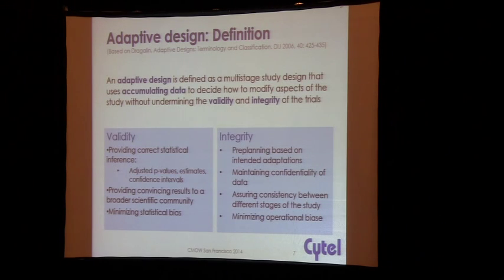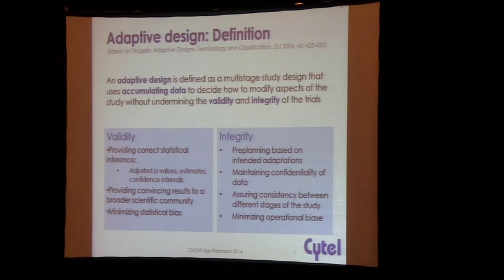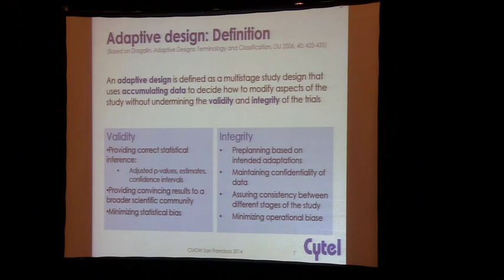The FDA wants all the adaptations to be pre-planned, which means that amendments to protocols are not adaptations. This is something that you put ahead of time saying: if I see a certain condition happen during the trial, I'll change it in a certain way. This is where simulations start playing a role, because there's a lot of uncertainty as to how the trial will actually run, and the only way to figure out what you would do under different situations is to simulate the potential future course of the trial.